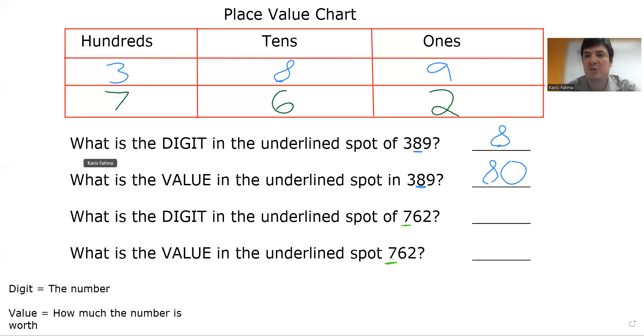So the first question asks, what is the digit in the underlined spot of 762? The digit is just the number. So the digit would be 7.